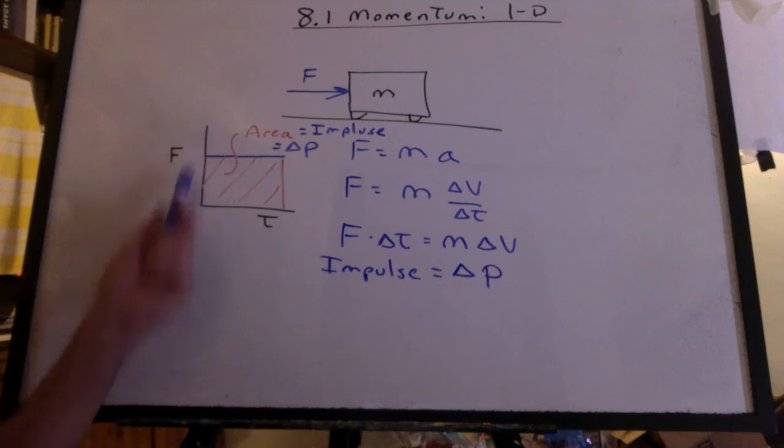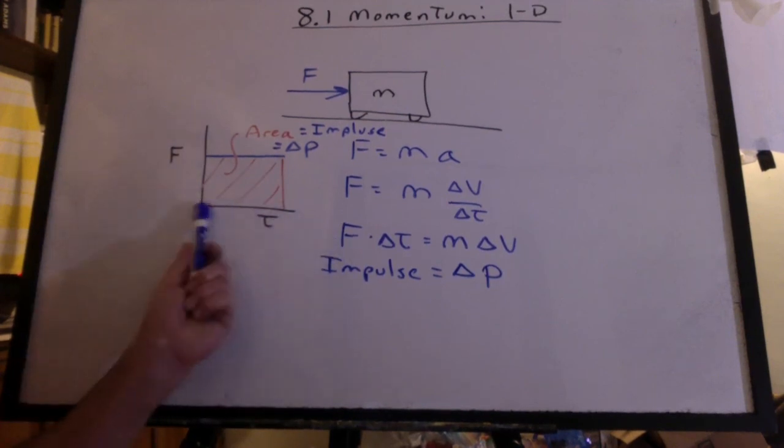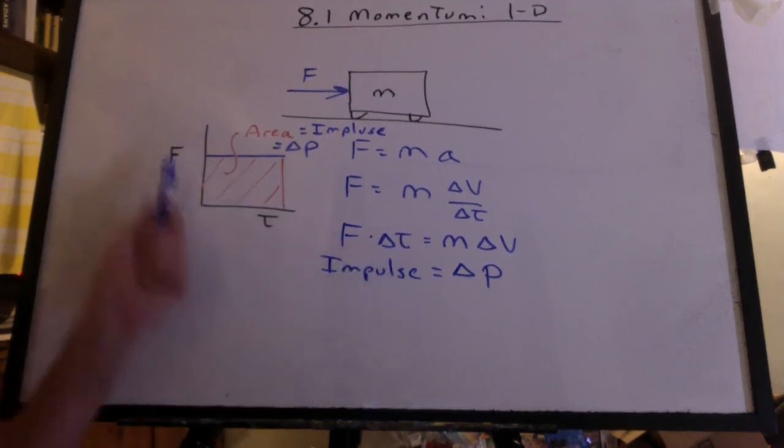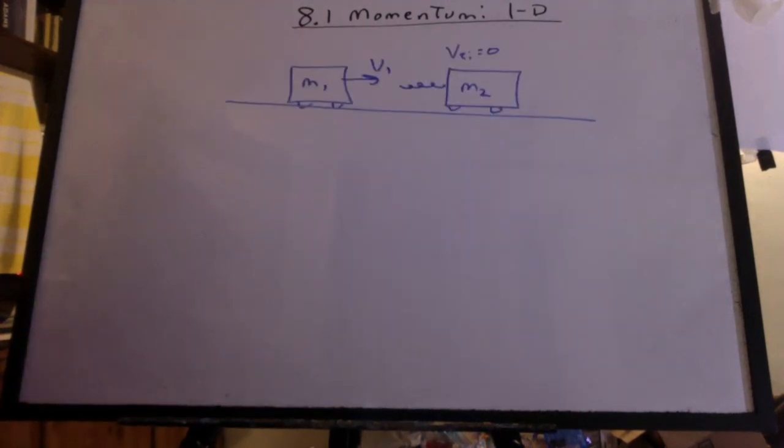You see, on the y-axis, we have F. On the x-axis, we have t. So when we multiply the two, we get an area.